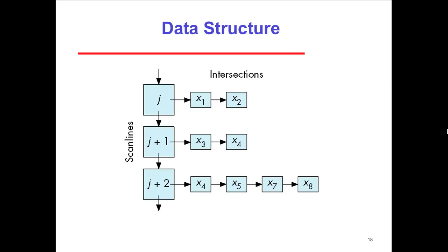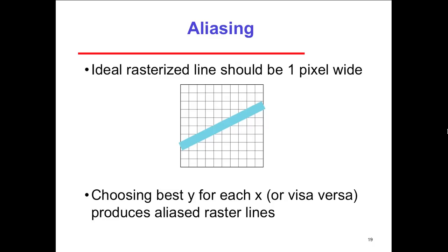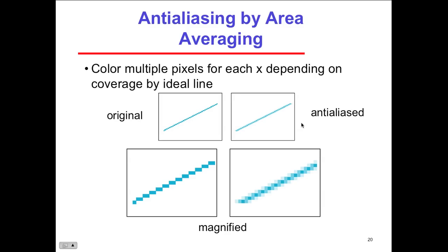The concept of aliasing: an ideal raster line should be one pixel wide. Choosing the best Y for each X produces an aliased raster line — it's an approximation. Anti-aliasing by area averaging makes the color of multiple pixels at each X depend on the line's coverage. Here's the original line and here's the anti-aliased version — magnified, you can see the discrete versus anti-aliased forms. You'll see this in most graphic applications; in Microsoft Paint, zoom in with the magnifying glass to see both options.